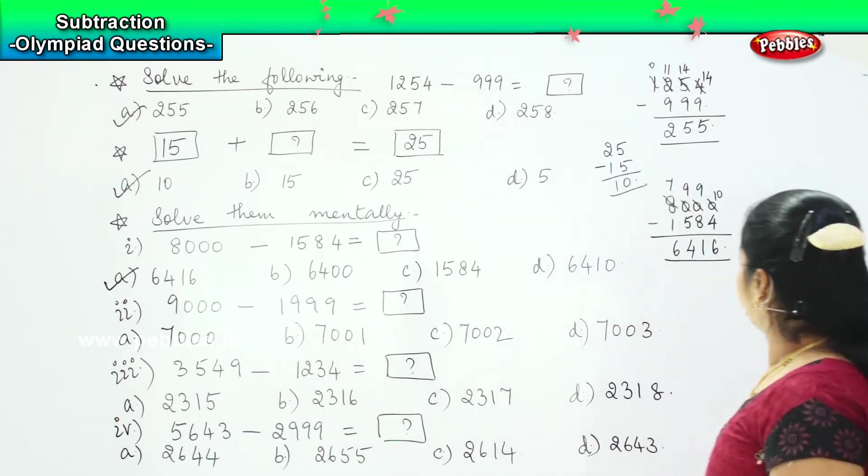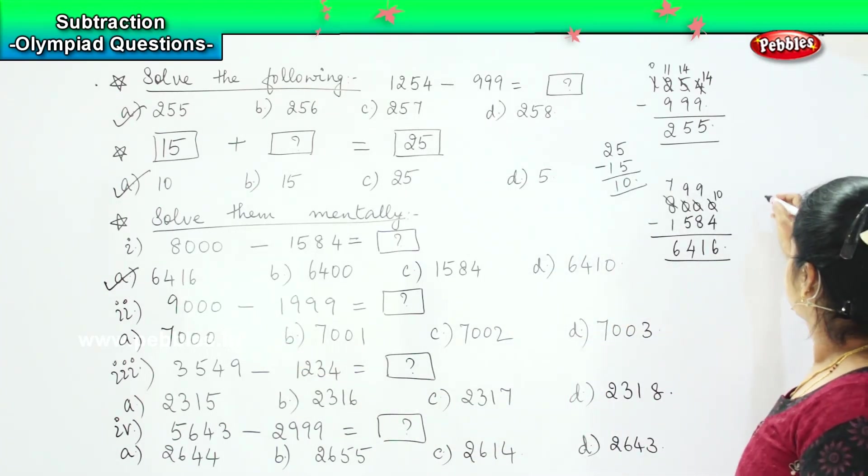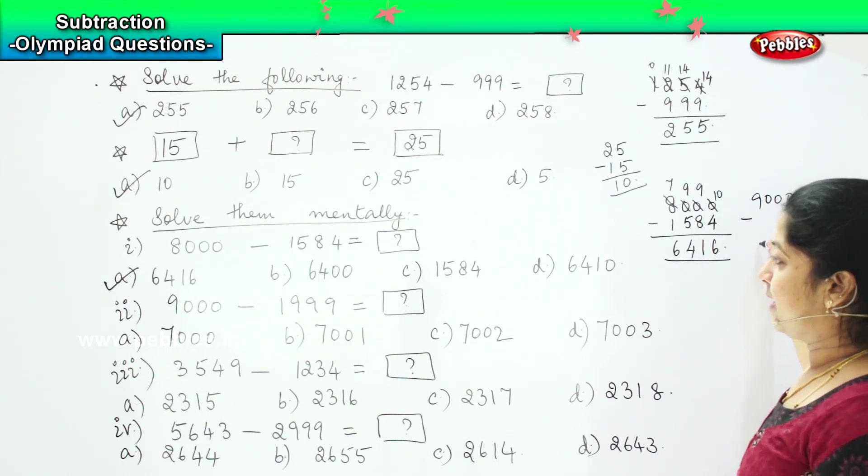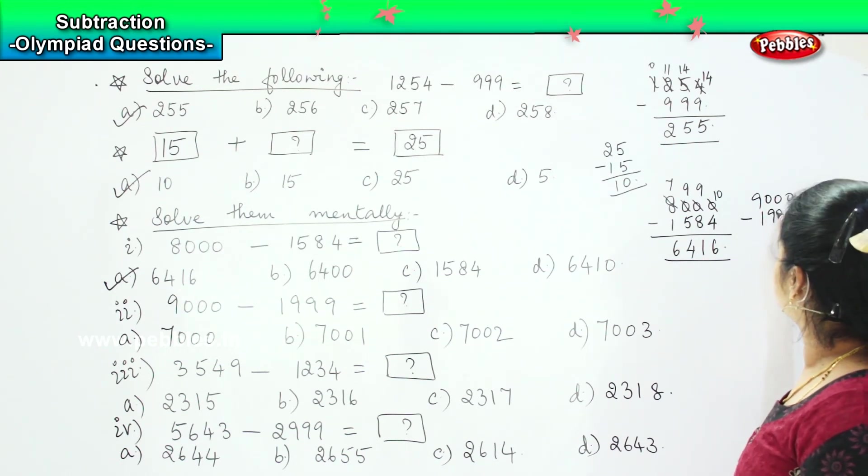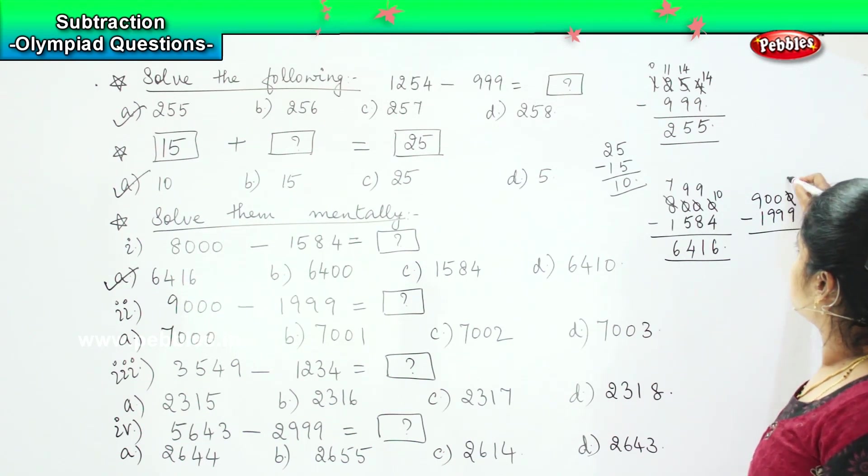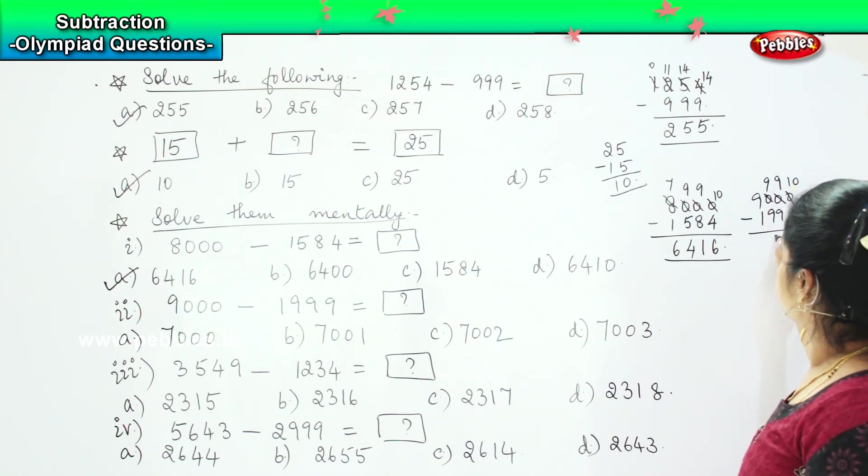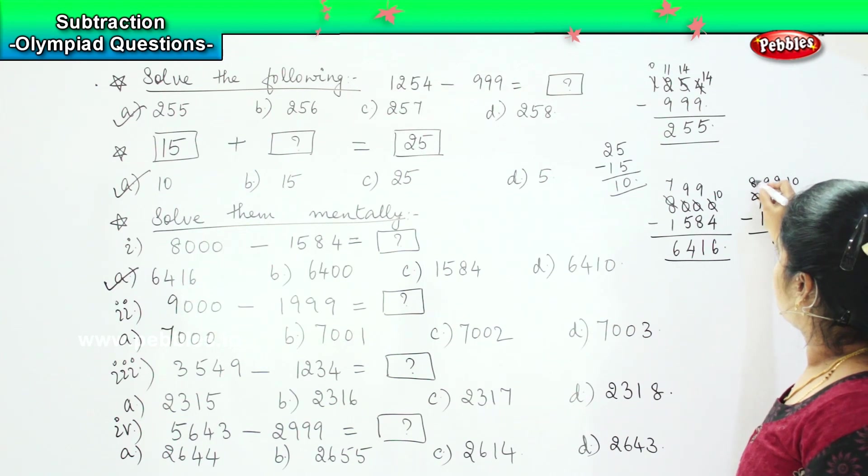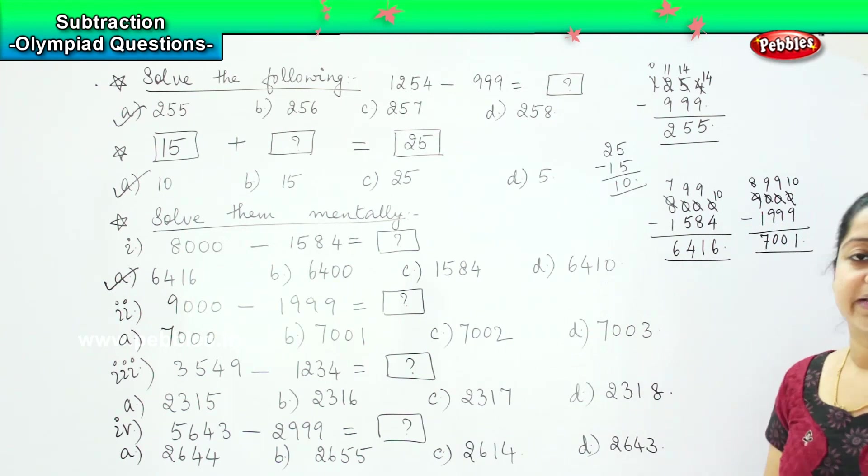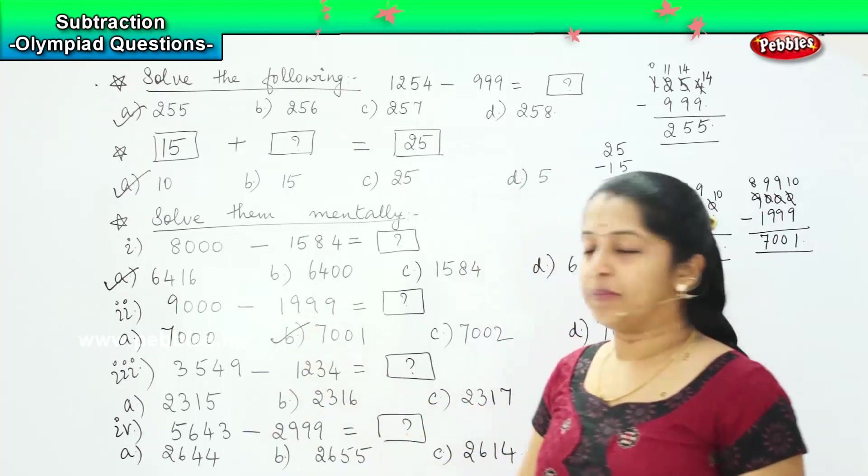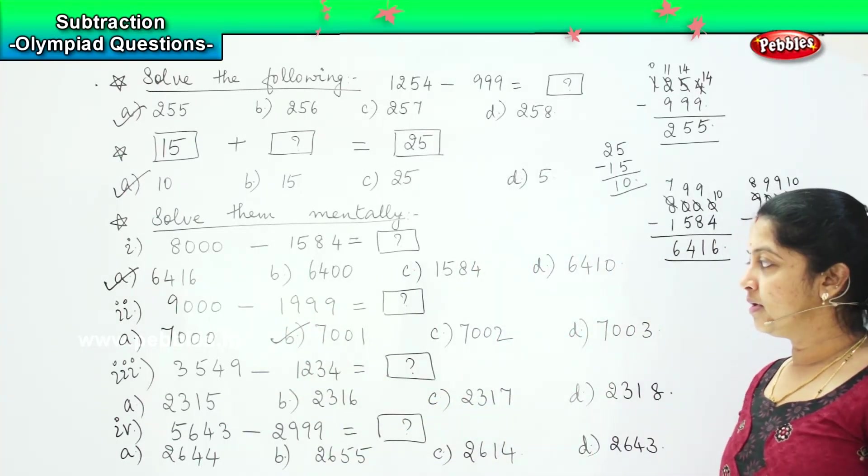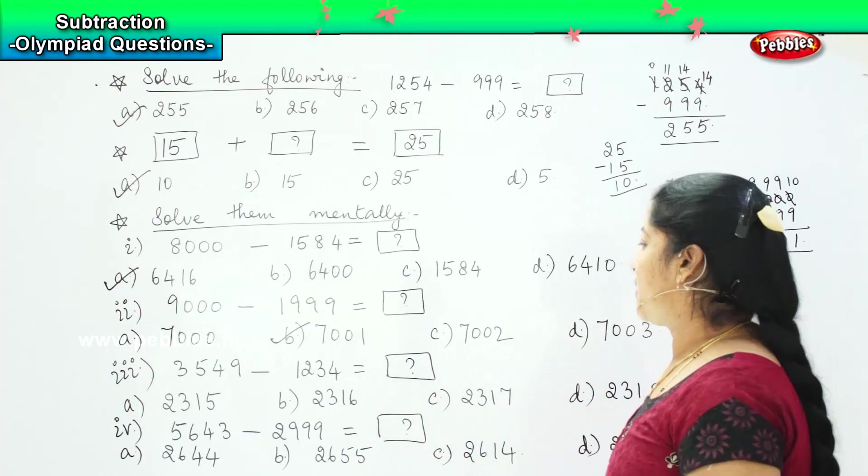Coming to the next question. The next question asks us 9000 minus 1999. So 10 minus 9 is 1. 9 minus 9 is 0. 9 minus 9 is 0. And 8 minus 1 is 7. So the answer is 7001. Where is it? This is option B. Clear?